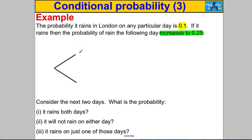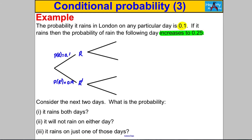Let's think of day one — what are the options? Either it rains or it doesn't rain. On the first day, given we know nothing about other days, the probability it rains is 0.1. Therefore the probability it doesn't rain is 1 minus that, which is 0.9. Now on the second day — if it did rain on the first day, the probability it rains on the second day increases to 0.25. Therefore the probability it doesn't rain given it rained is 1 minus 0.25, which is 0.75.